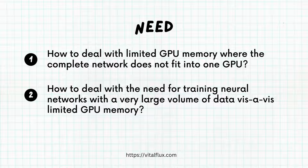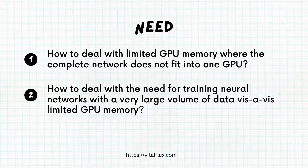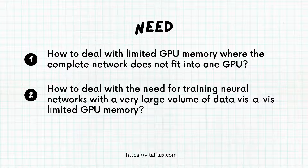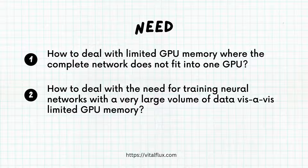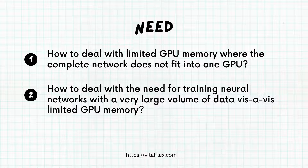When we are talking about deep neural networks having a large volume of data, or for which the model size is large enough, we have a constraint regarding limited GPU memory. In order to overcome this constraint, we need different kinds of mechanisms where we need to split the data or split the model onto different GPU memories and then train the deep learning model.